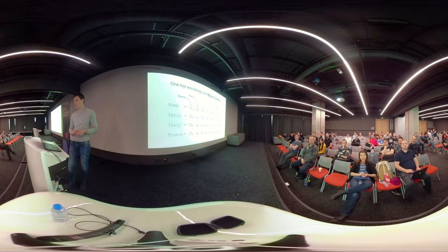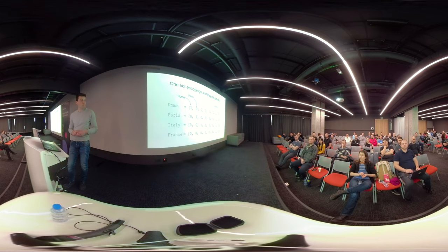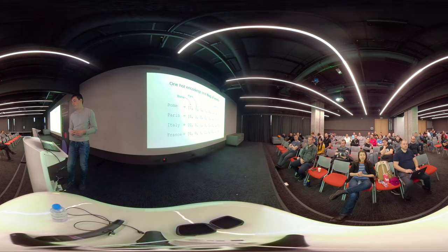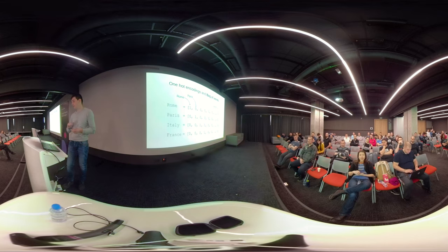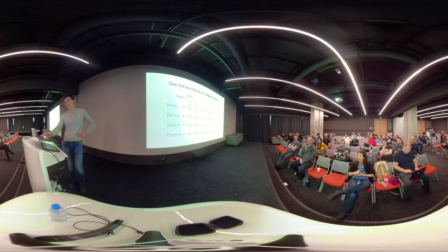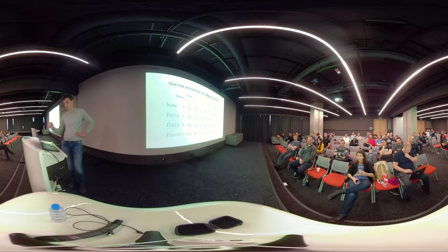Every word has an index inside an array of size equal to the total number of words in the training data. For example, 'Rome' is the first word — it gets a one at the first index and zeros elsewhere. This is called embedding, and people have been using this for the last ten years to classify documents. The bag of words is just a representation of a whole sentence in the same vector where every word occurrence is counted at its specific index.